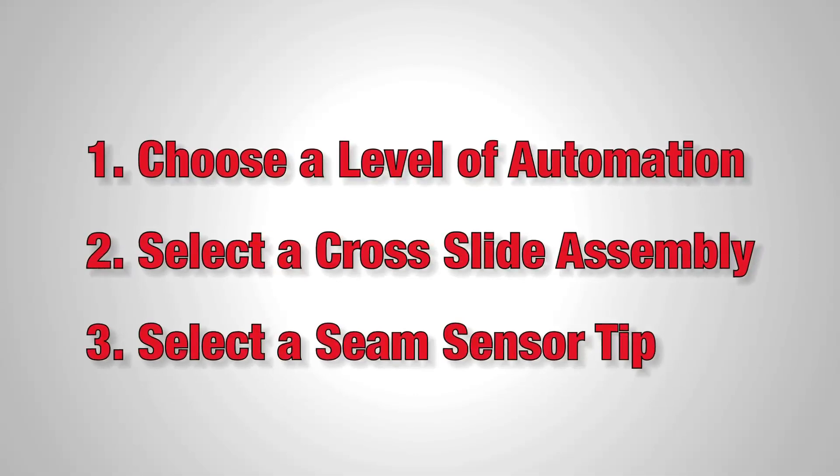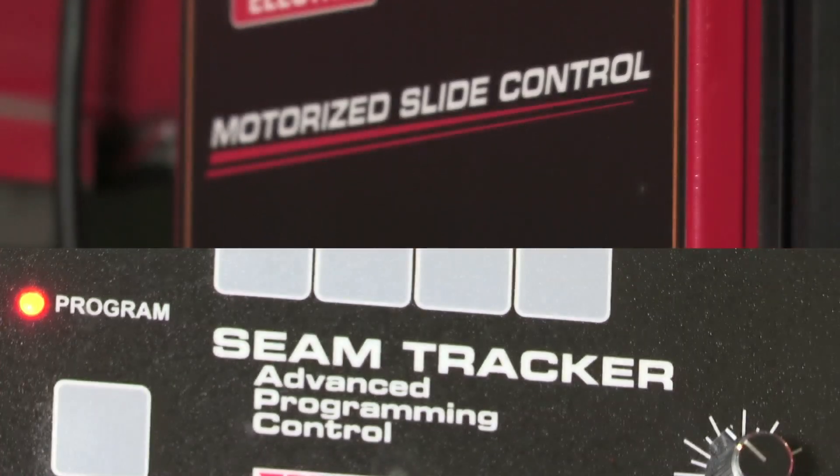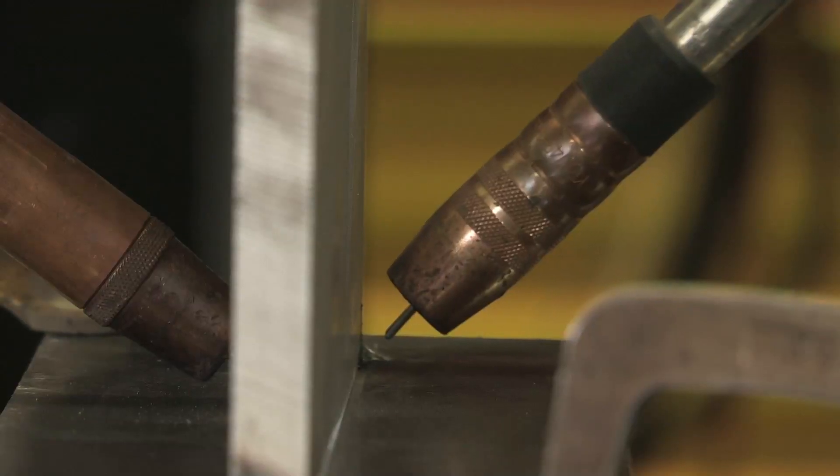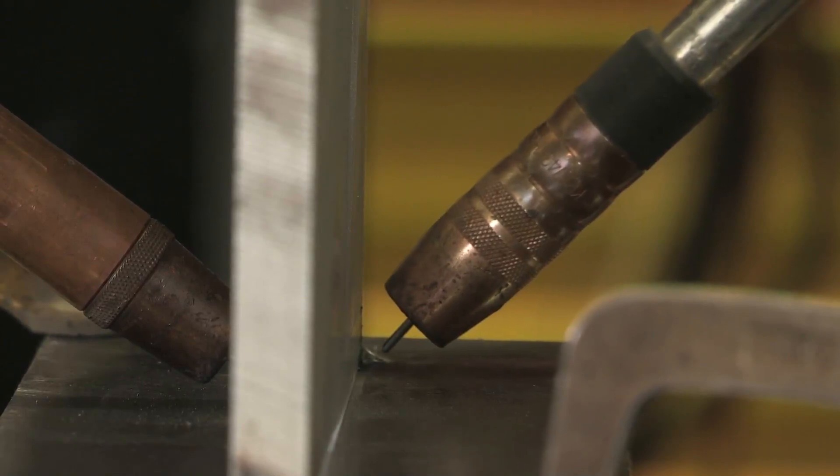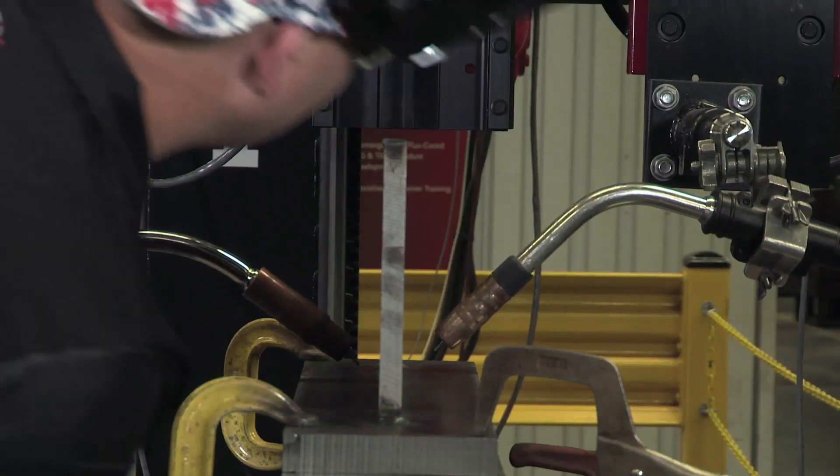Three easy steps are all it takes to get you on the right path to simpler, better welding. First, select your level of automation. Lincoln Electric's motorized slide control system allows the operator to manually track the joint using an intuitive joystick pendant. This system is best for simple, repetitive welding applications.